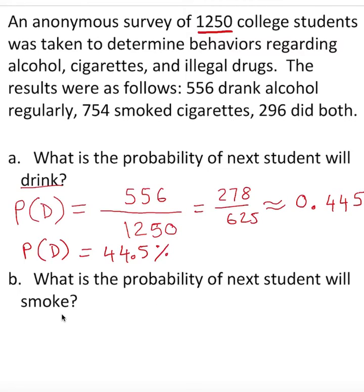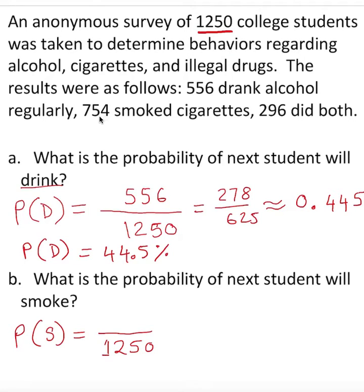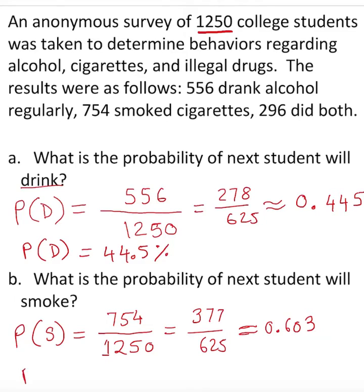Next, the probability that the next student will smoke. We do the same thing: P(S) = 754/1250, since 754 students smoke. The reduced fraction is 377/625, giving a decimal of 0.603, or 60.3%. Remember, we can express probability as a reduced fraction, decimal, or percentage depending on what the question asks.